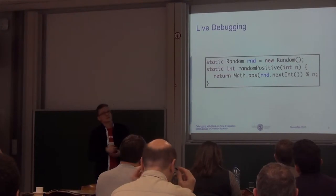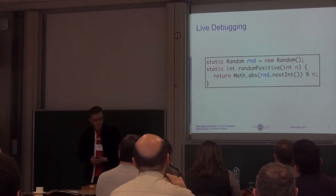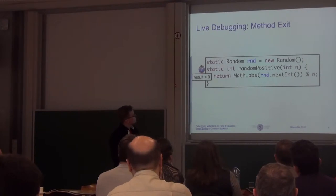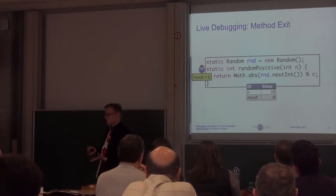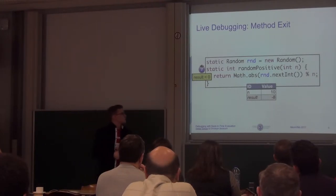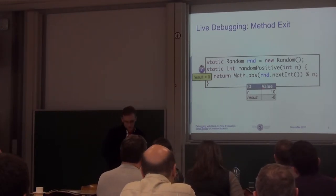First, with live debugging — the debugger integrated into your IDE. We could use a breakpoint which will trigger a method exit if the result is negative. When the breakpoint triggers, we can inspect the execution environment and see the argument was 10, the result was minus 8. So there's nothing we learned from that.